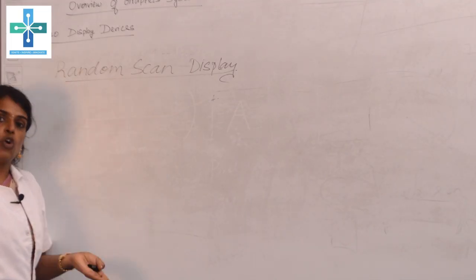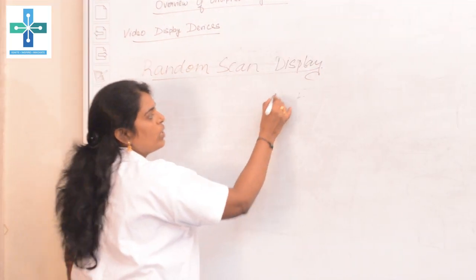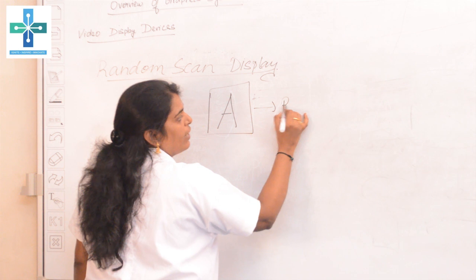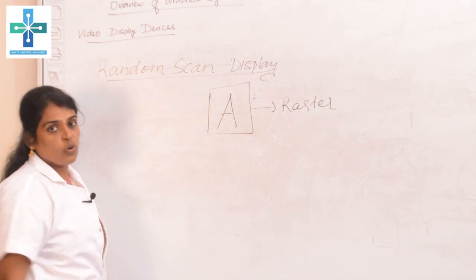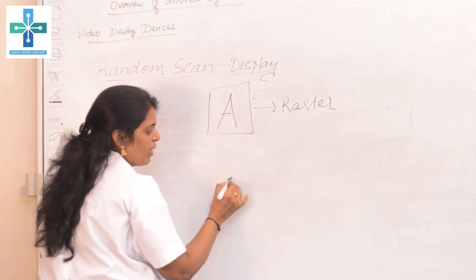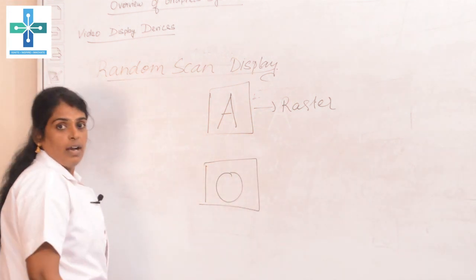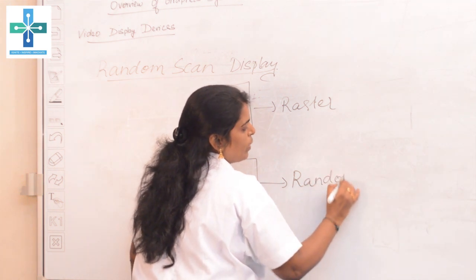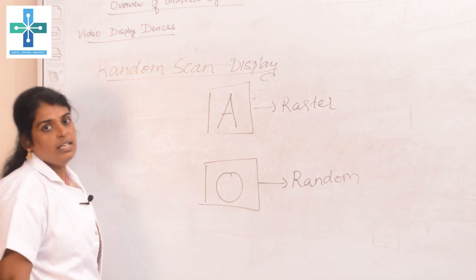The drawback of the raster scan display is that it can draw only straight lines. The raster scan display cannot draw curved lines. Whereas in random scan display it is not like that — you can even draw curved lines. For example, if you want to draw a curved line, you can use a random scan display, but in raster scan display you cannot draw a curved line.